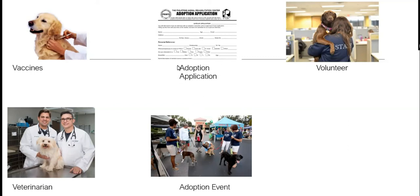Then we have 'adoption application.' When you want to adopt an animal, you have to fill out an application in which you put your name, address, gender, why you want to adopt, your phone number, etc. This way the association or shelter can have your information and contact you if anything happens, or they can investigate you to make sure you are capable of taking care of a pet.